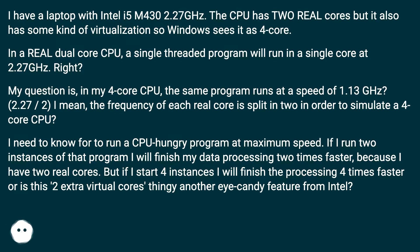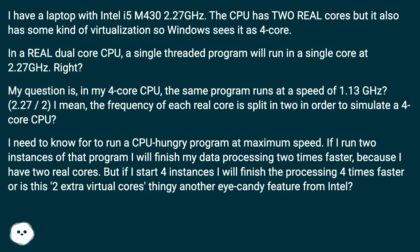The frequency of each real core is split in two in order to simulate a 4-core CPU. I need to know this to run a CPU-hungry program at maximum speed. If I run two instances of that program I will finish my data processing two times faster, because I have two real cores. But if I start four instances, will I finish the processing four times faster, or is this two extra virtual cores feature just eye candy from Intel?